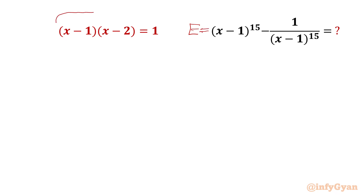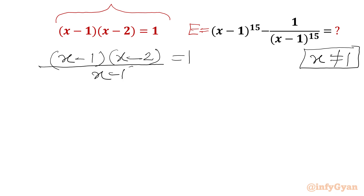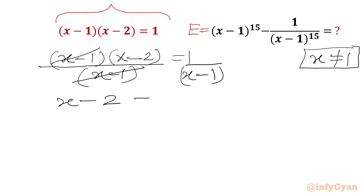The given equation is (x minus 1)(x minus 2) equal to 1. Note that x cannot be equal to 1, since the denominator cannot be 0. Dividing both sides by (x minus 1), we get x minus 2 equal to 1 over (x minus 1).